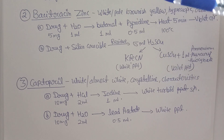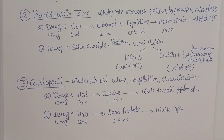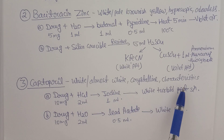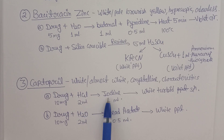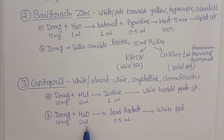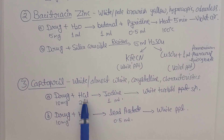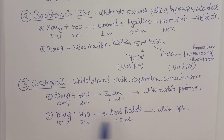The third drug, C for Captopril, is white or almost white crystalline powder with a characteristic odor. Test 1: Take 10 mg drug, add 2 mL hydrochloric acid, then 1 mL iodine — a white turbid solution confirms Captopril. Test 2: Take 10 mg drug, dissolve in 2 mL water, add 0.5 mL lead acetate — a white precipitate forms. The key difference between the two tests is water vs. HCl, and lead acetate vs. iodine.